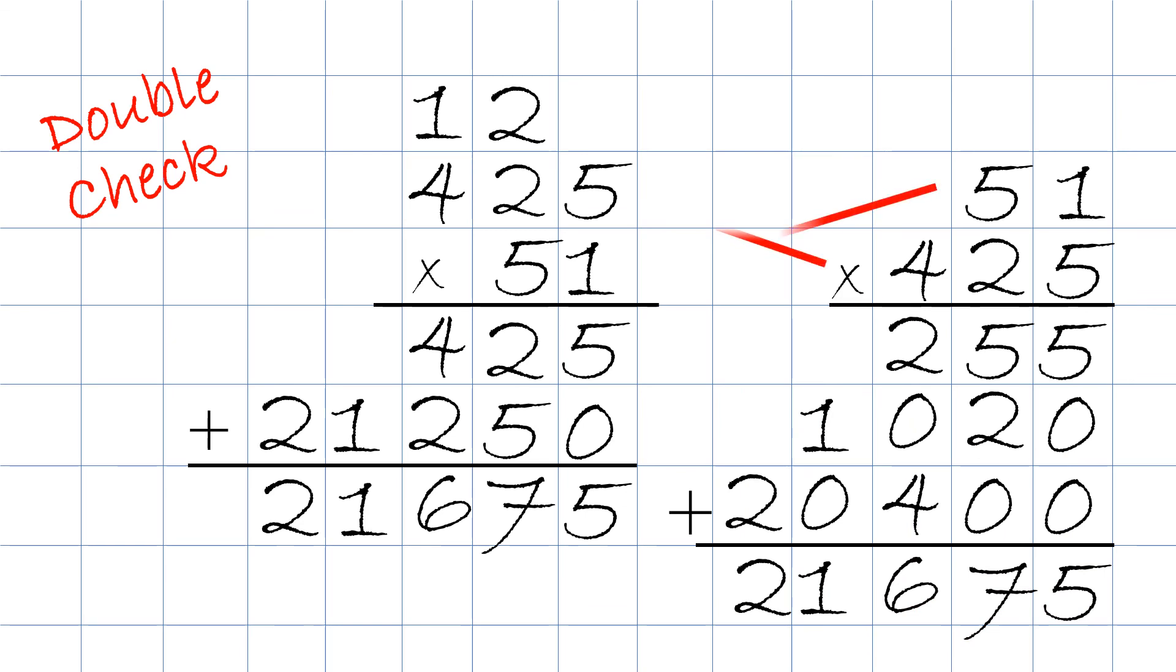The factors on top, we flip them over as shown by the arrows, and the answers on the bottom is both 21,675. So the answers match. We did it correctly.